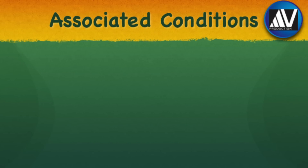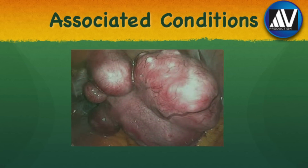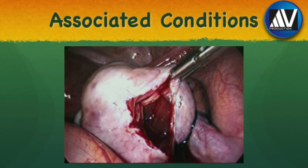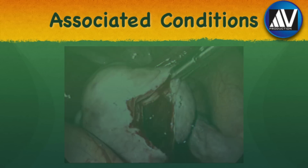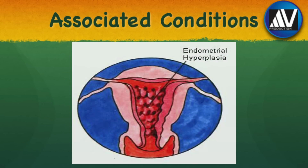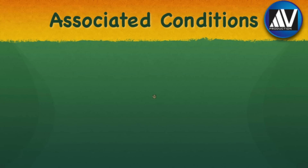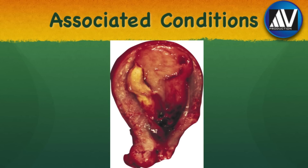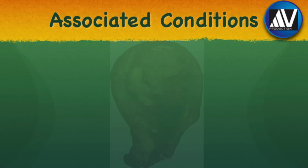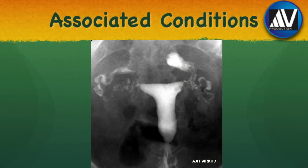Association of adenomyosis with the following conditions suggests a common underlying disorder like hyperestrogenemia. It is known to be associated with leiomyoma, endometriosis, endometrial hyperplasia, endometrial polyp, endometrial carcinoma, and salpingitis isthmica nodosa.